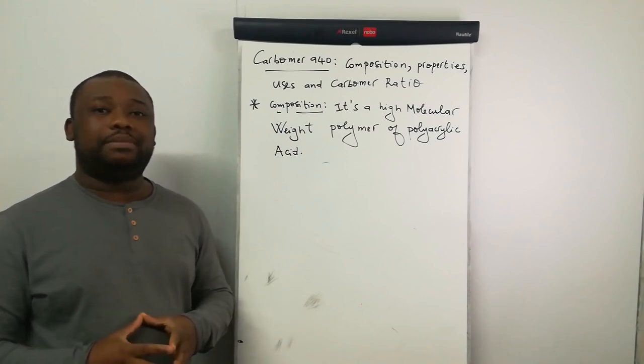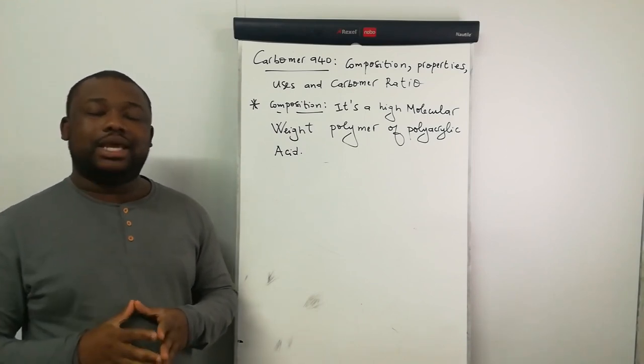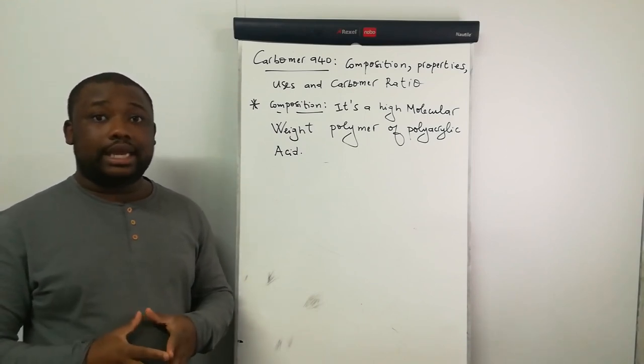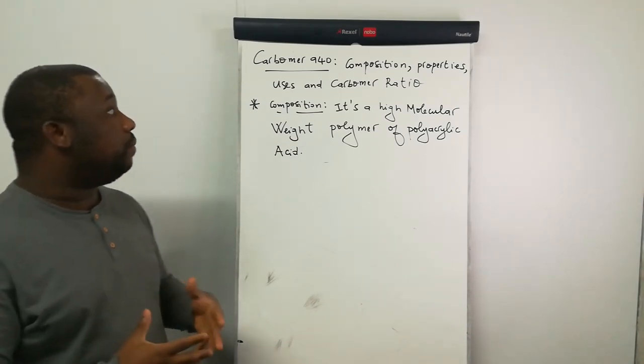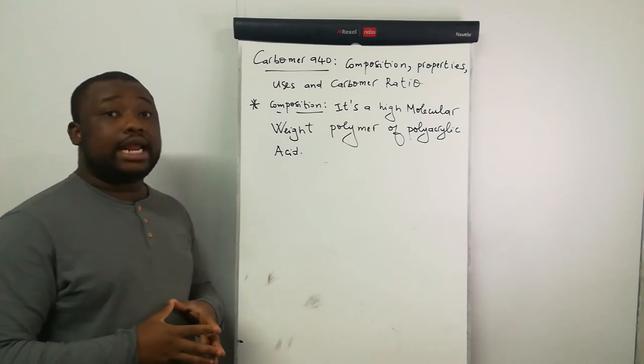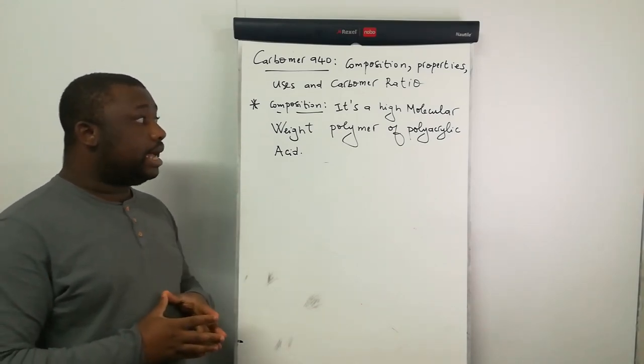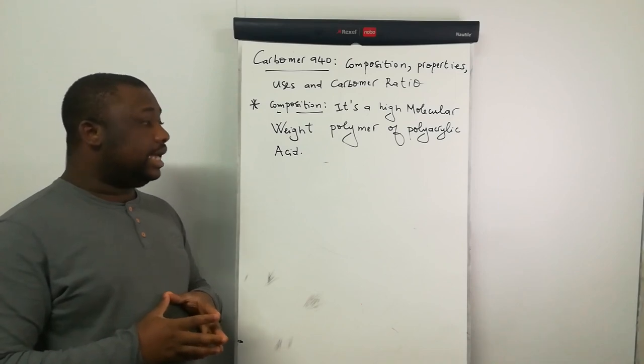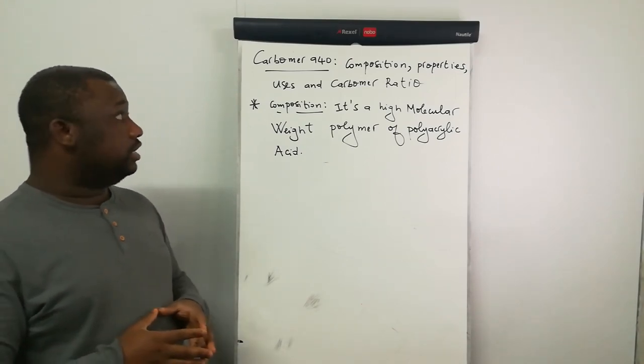If you're stopping by the channel for the first time, make sure that you subscribe, smash that like button for me, and consider dropping us a comment below. Let's start by talking of the composition of Carbomer 940. You need to know that it's a high molecular weight polymer of polyacrylic acid.